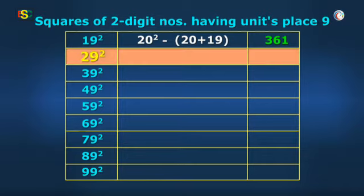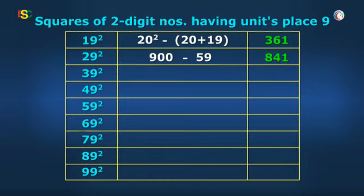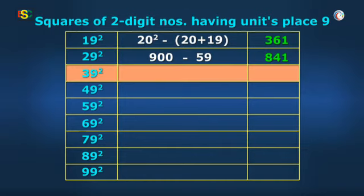Okay, for 29, it will be 30 square. And because we are going backwards, it will be 30 square minus 30 plus 29. That is 30 square minus 59, which will be 900 minus 59 or 841. And also for 39 square, it will be 40 square minus 40 plus 39 or simply 1600 minus 79.